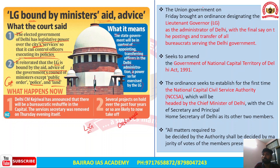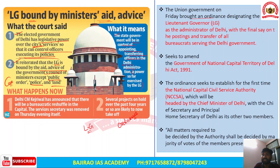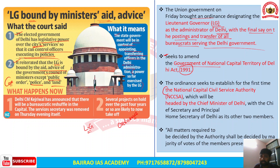This ordinance seeks to amend the Government of National Capital Territory of Delhi Act, 1991. It also seeks to establish the National Capital Civil Services Authority (NCSA), headed by the Chief Minister of Delhi with the Chief Secretary and Principal Home Secretary as members. All matters regarding appointment and transfer of bureaucrats are decided by majority vote of NCSA members present and voting.